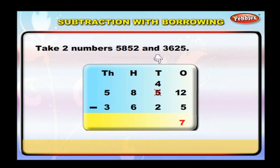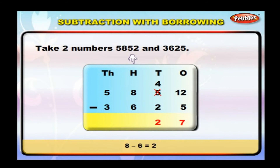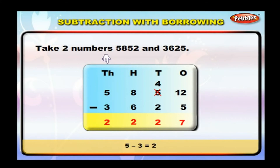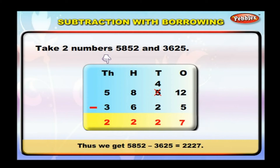Subtract the tens. From five, we borrowed one, so its value reduces to four. Four minus two is equal to two. Write two below the tens column. Subtract the hundreds: eight minus six is equal to two. Write two below the hundreds column. Subtract the thousands: five minus three is equal to two. Write two below the thousands column. Thus, five thousand eight hundred and fifty-two minus three thousand six hundred and twenty-five is equal to two thousand two hundred and twenty-seven.